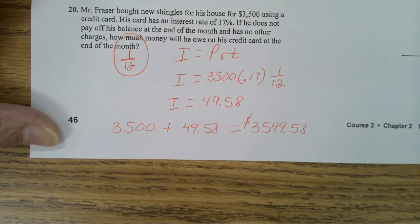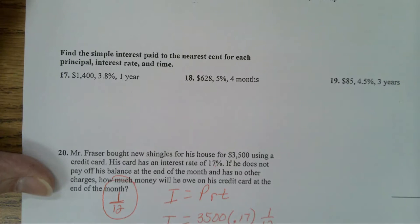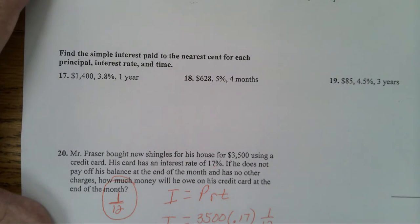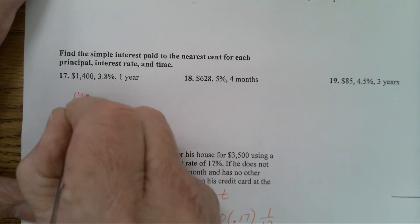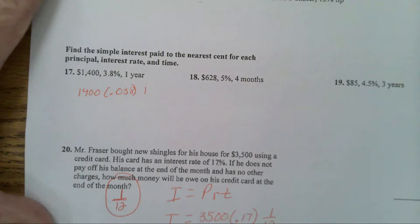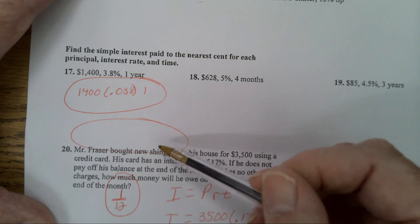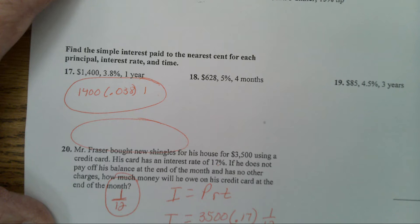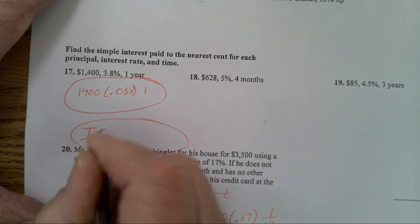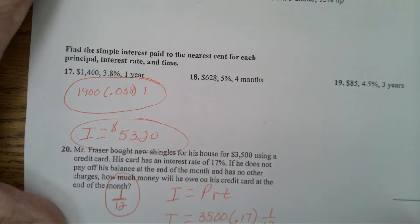Now let's go to 17, 18, and 19. It says find the simple interest to the nearest cent for each principal, interest rate, and time problem. All right, in this one: $1,400 times 0.038 times 1. Make sure you have 0.038 on the test - you get points for this. You have to show this and then you'll have to show your answer. This is worth as much as your answer, so make sure you do those things.